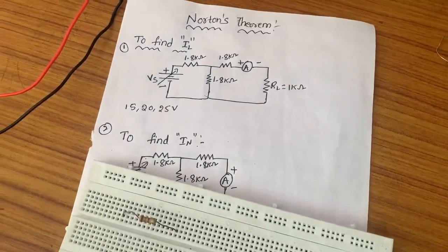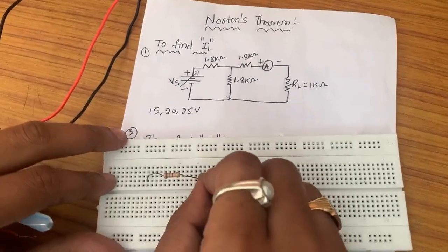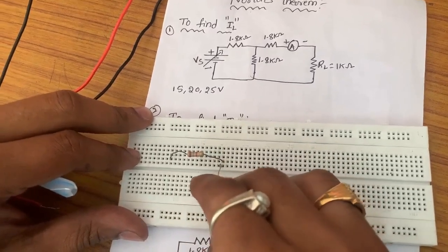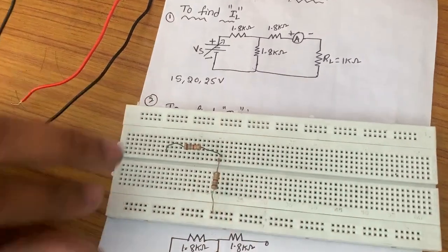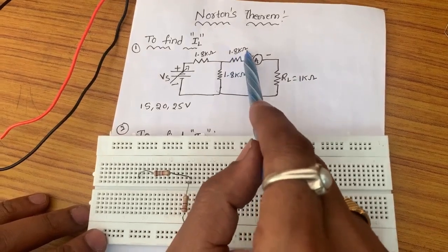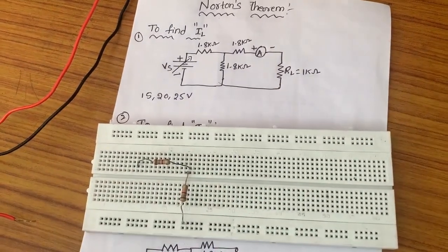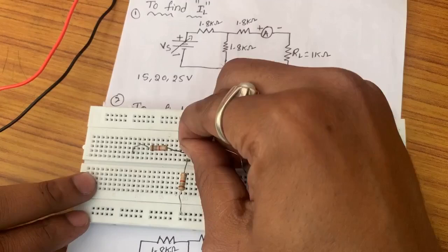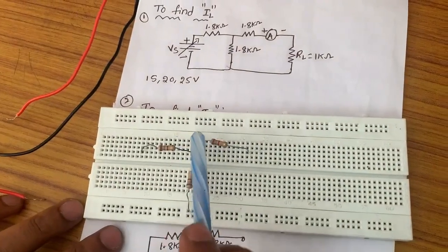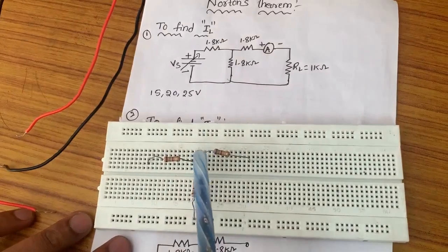Now I am taking one more 1.8 kilo ohm resistor. I am connecting it — we should connect vertically. The 1.8 kilo ohm second terminal is connected to ground. Again, one more 1.8 kilo ohm first terminal is connected to this junction point. Now I am taking one more 1.8 kilo ohm resistor and connecting vertically because this terminal is connected. These three resistors are connected at this junction point.